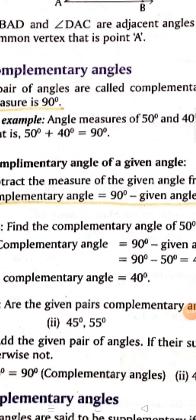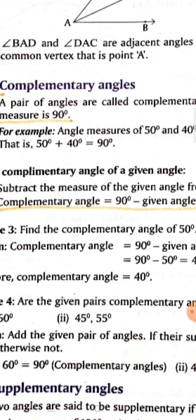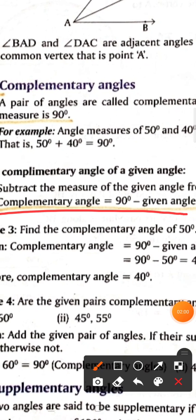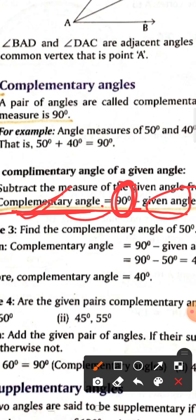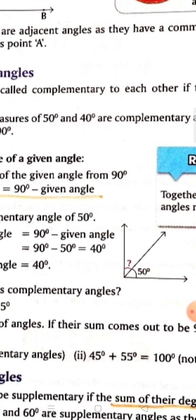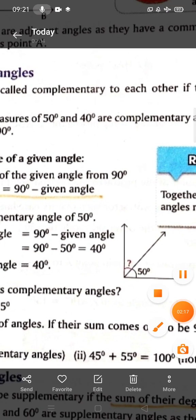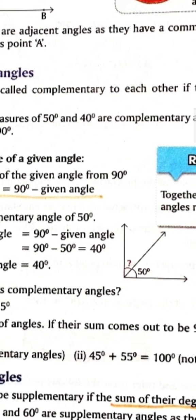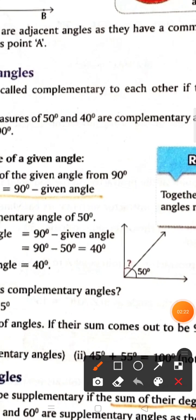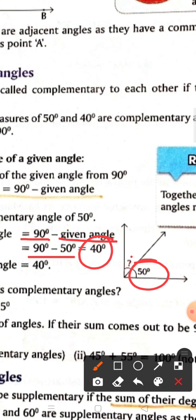For finding the complementary angle, the formula is: 90 degrees minus the given angle. We use 90 because it is a complementary angle. For example, 90 degrees minus the given angle of 50 degrees gives 40 degrees — that is the complementary angle.